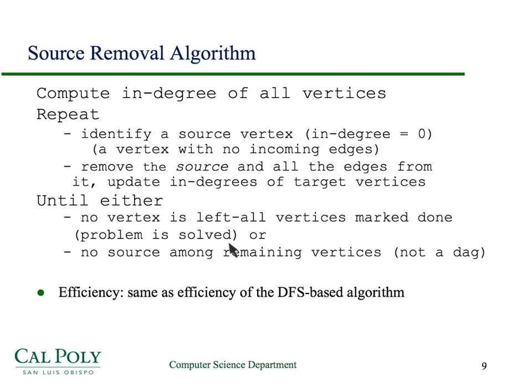If there's no source remaining but there are still vertices left, that tells you the initial graph was not a directed acyclic graph. The depth-first search-based algorithm has the same efficiency as this source removal algorithm.